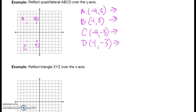When I reflect over the y-axis — remember that's my vertical axis — each one of these points is going to be the same distance away from the y-axis, just on the opposite side. B is one unit away from the line of reflection, so B prime is also going to be one unit away, just on the opposite side. So B prime is now at the ordered pair (1, 3).